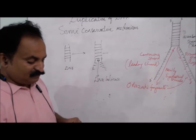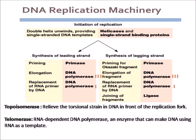Let us examine the enzymes and machinery for DNA replication. The first one is primase, which helps in the synthesis of RNA primer. Next is DNA polymerase III, a DNA-dependent DNA polymerase that synthesizes new DNA fragments and provides dNTPs. DNA polymerase I is otherwise called the proofreading enzyme. DNA ligase helps to join the replicated fragments of DNA. Topoisomerase relieves the torsional strain in DNA in front of the replication fork. Telomerase is an RNA-dependent DNA polymerase — an enzyme that can make DNA using RNA as a template.